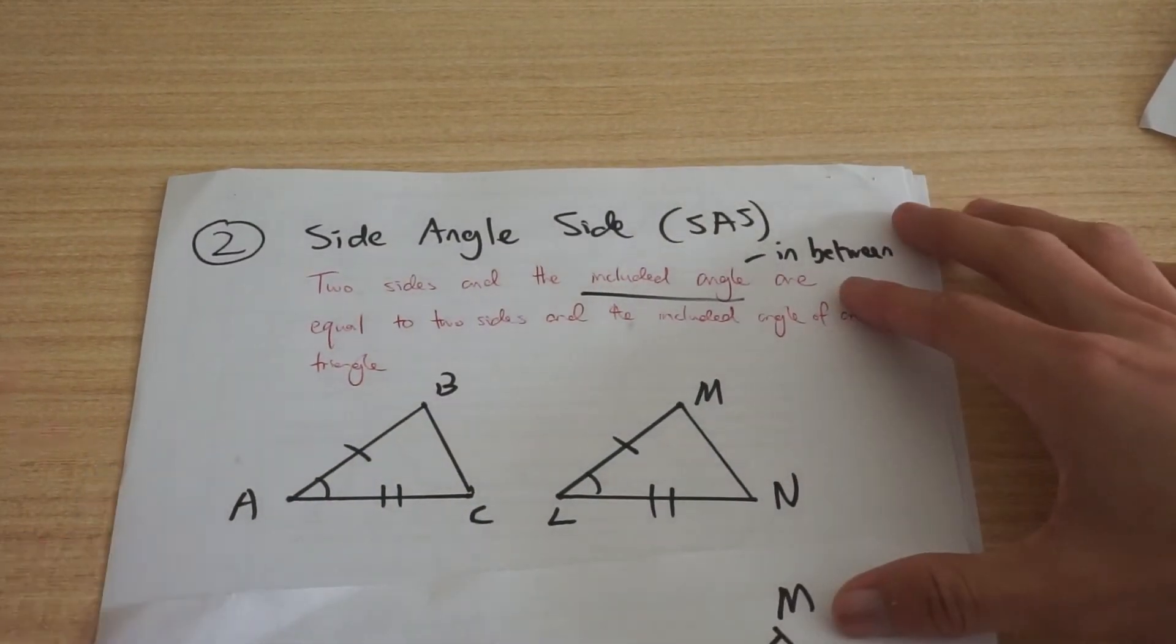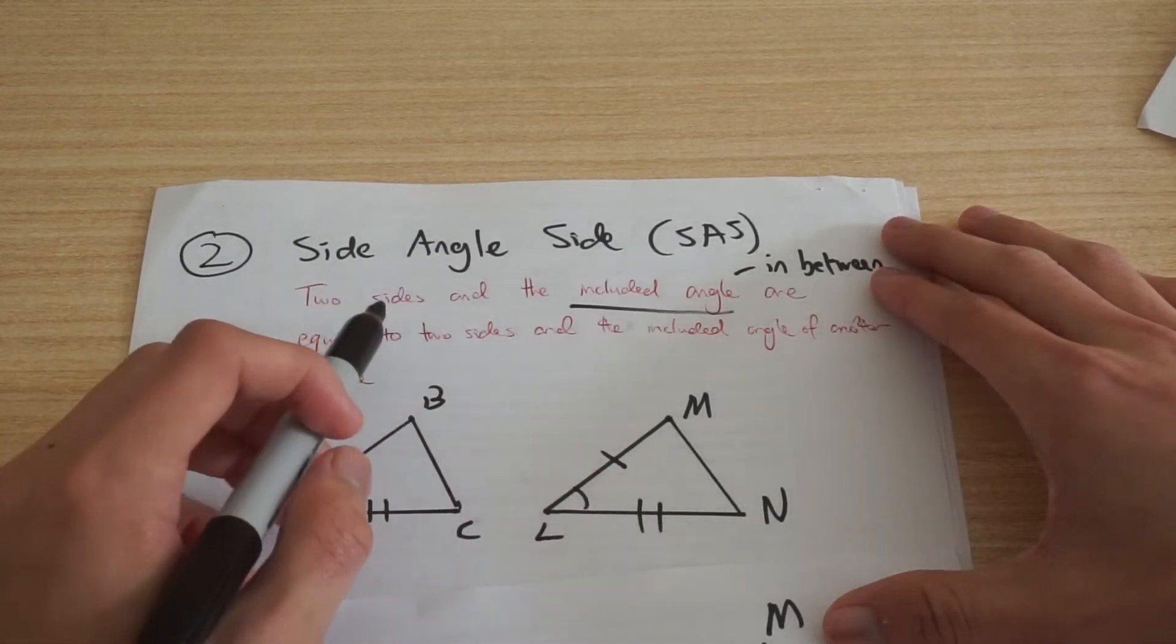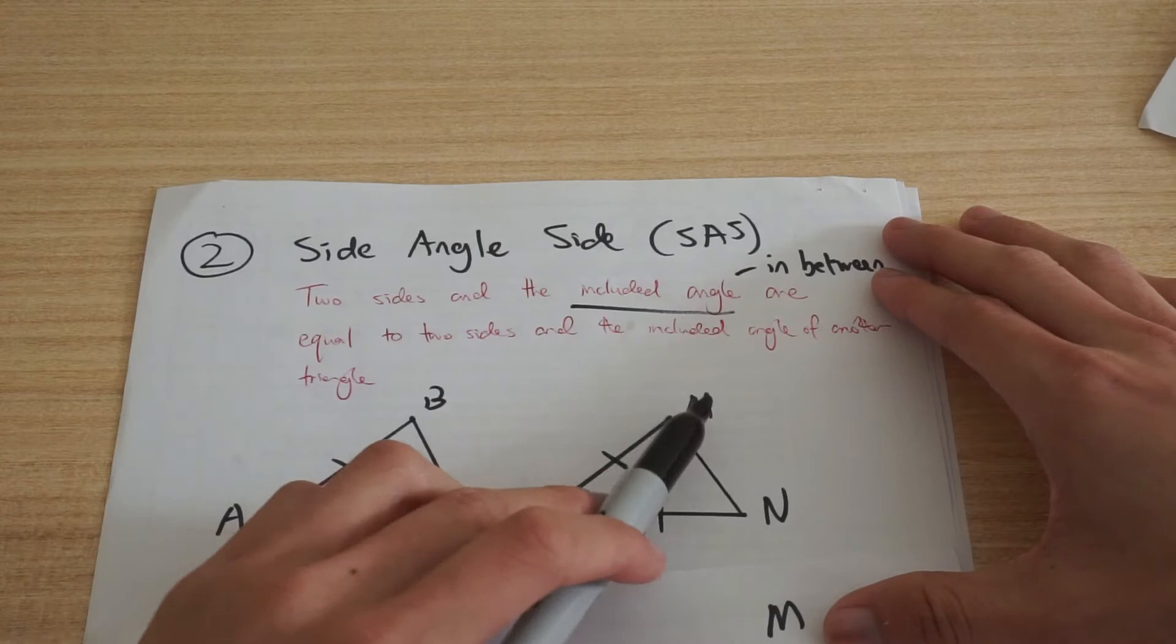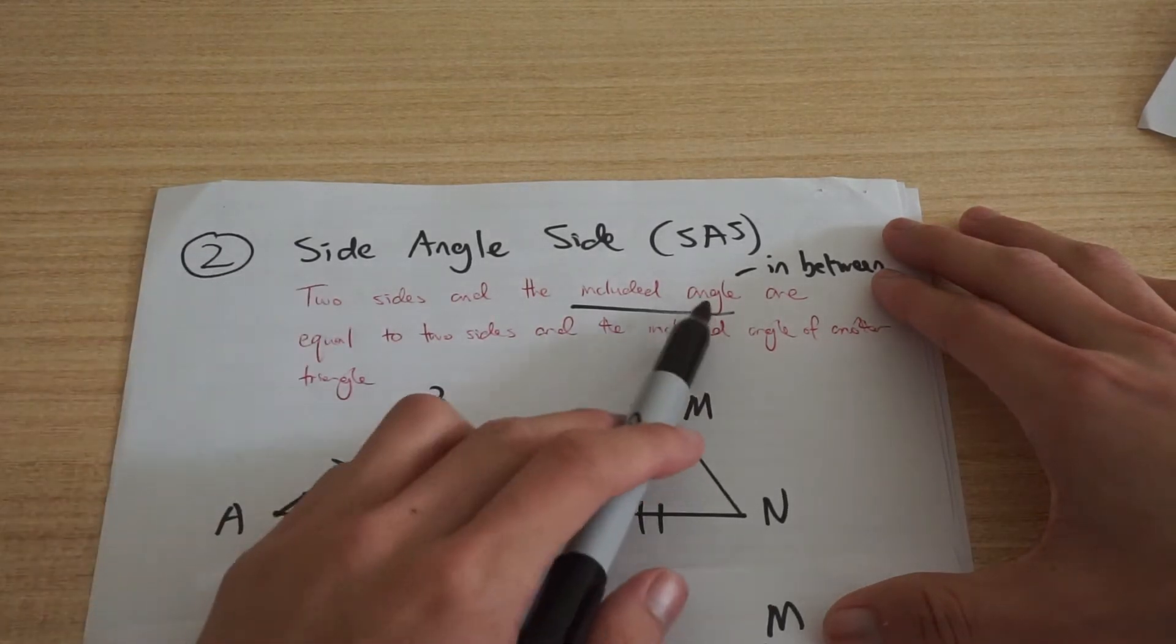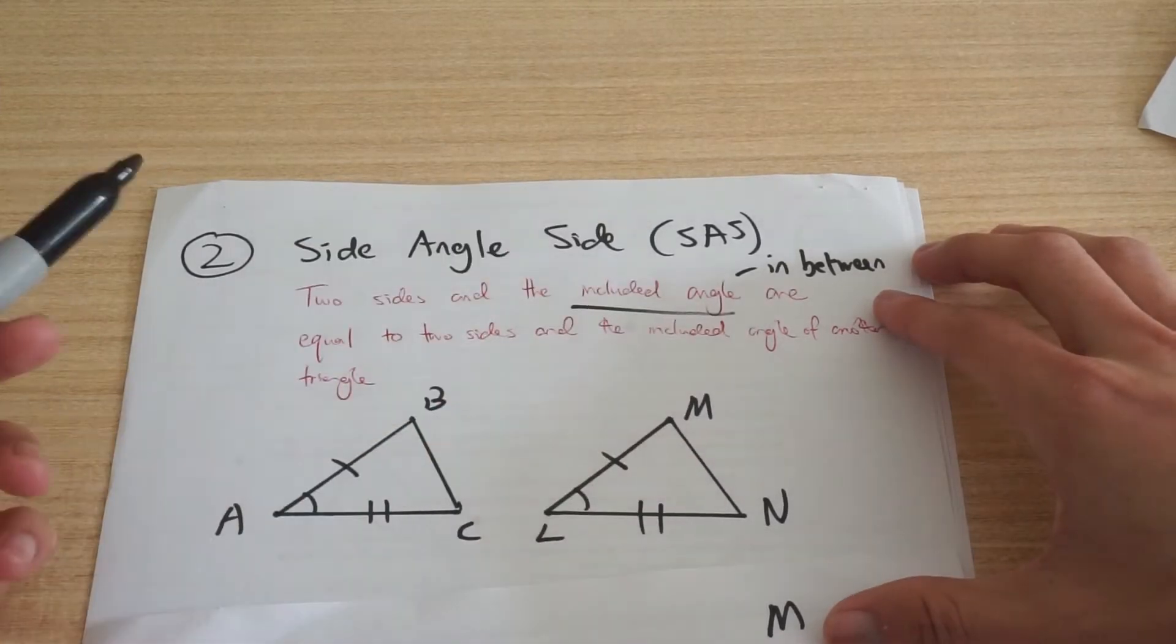The next one is called side angle side. So that's where two sides and the included angle are equal to two sides and the included angle of another one. And the important thing is this guy here, that they have the included angle, so the one in between.